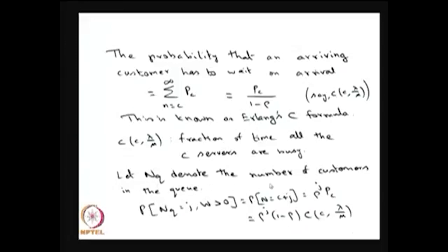The next quantity, N_q, denotes the number of customers in the queue. So either I use the letter N suffix q, or earlier I used the letter q itself. For that, I am finding the joint distribution — what is the probability that the number of customers in the queue is j and the waiting time W is going to be greater than 0. That is the same as what is the probability that c plus j customers are in the system. After a little simplification, you will get this joint probability in terms of the Erlang C formula.